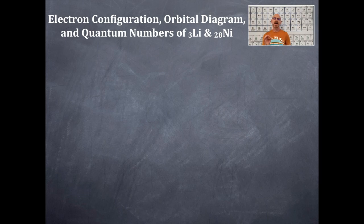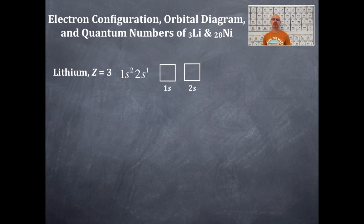So lithium is Z of 3. So that's 3 protons, so 3 electrons. So let's do that right now. So lithium, Z of 3. We're going to write out the electron configuration. That's 1s2, 2s1. Very simple electron configuration.